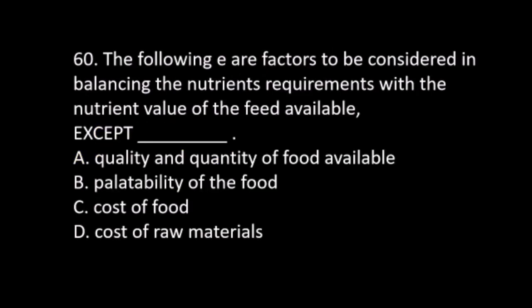Number 60. The following are factors to be considered in balancing the nutrient requirements with the nutrient value of the feed available, except: A. Quality and quantity of food available. B. Palatability of the food. C. Cost of food. D. Cost of raw materials. The answer is D. Cost of raw materials.